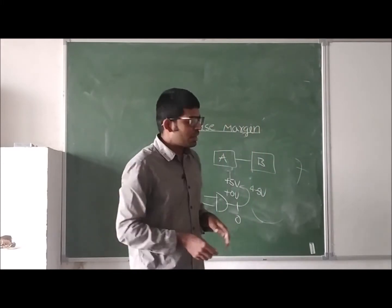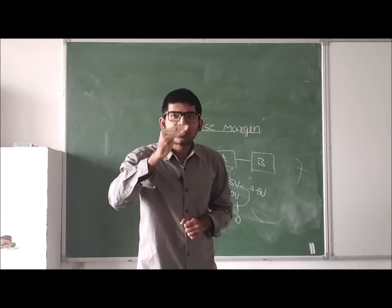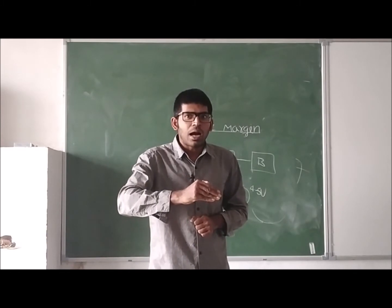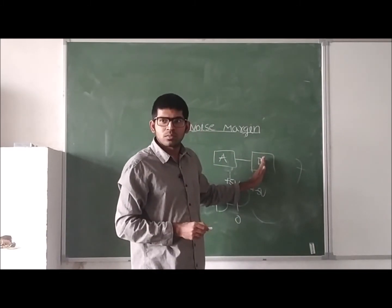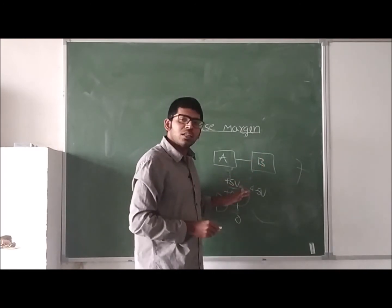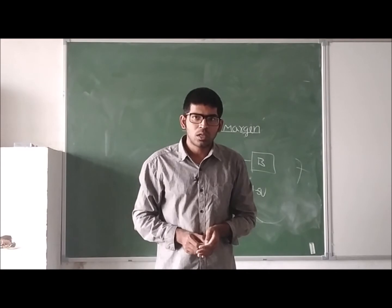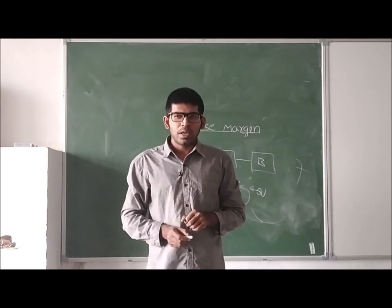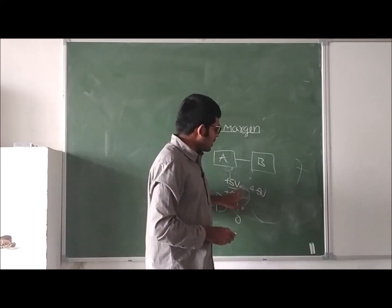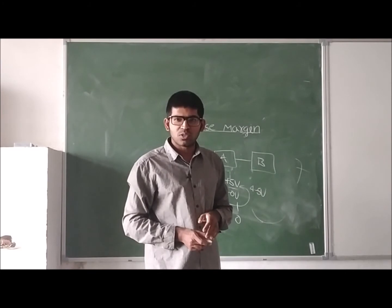So when the output voltage is changing from its value up to a certain value, it tolerates. If it changes beyond that value, the output may lead to false triggering. So this difference we call as a margin.